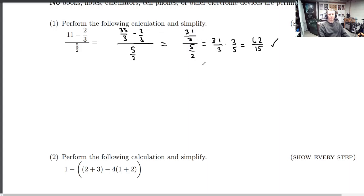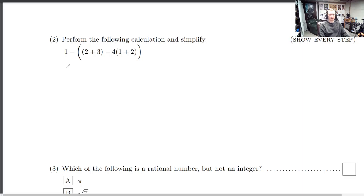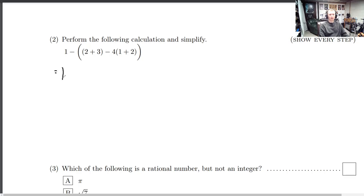Okay, this is sufficient for showing every step. This is sufficient. You don't need to explicitly write 33 minus 2 in this next step. Alright, so for the next one. Perform the following calculation and simplify.